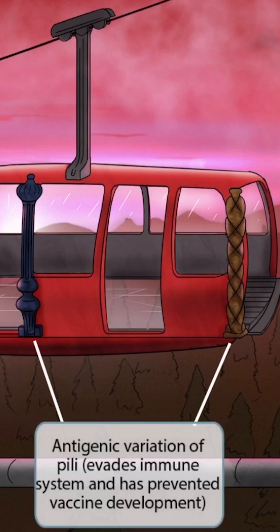Notice that we've shown two unique pillars that help provide structural support to the gondola. Pillar sounds like pili, so in this image they represent pili. The fact that there are two of them and that they look distinct from one another is to help you remember that Neisseria gonorrhea exhibits antigenic variation of its pili. Antigenic variation of the pili is what allows Neisseria gonorrhea to evade the immune system, and it's also the reason why vaccine development has been difficult. This is possible because the organism has complex genes that code for the pili, and as the genes undergo recombination, the pili are significantly altered.